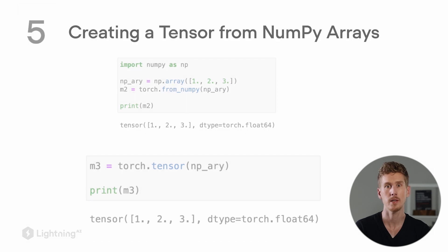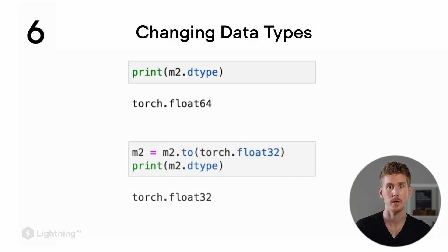However, in PyTorch, we can easily change the precision. To change from float64 to float32, we can use the PyTorch method .to and convert it into a torch.float32 tensor, as shown on the slides.